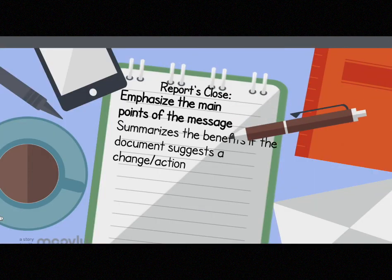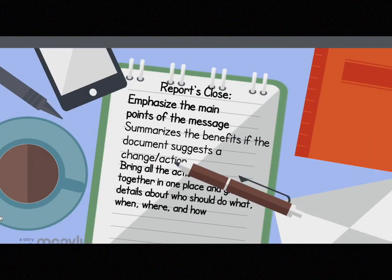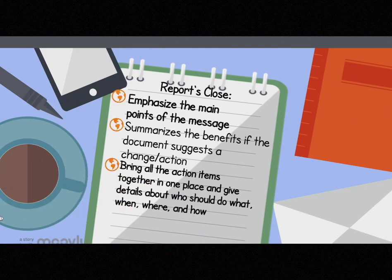A report's close varies depending on the purpose of the report or whether it uses a direct or indirect approach. However, a report's close has three important functions: one, it emphasizes the main points of the message; two, it summarizes the benefits if the document suggests a change or some other course of action; and three, it brings all action items together in one place and gives details about who should do what, when, where, and how.